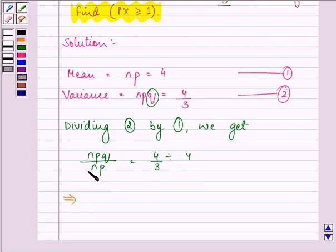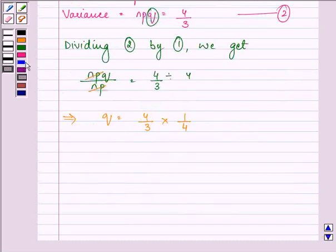This implies q is equal to 4/3 into 1/4. That implies q is equal to 1/3.